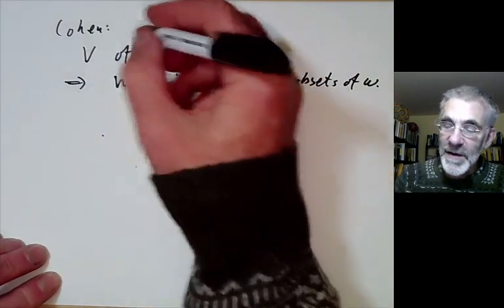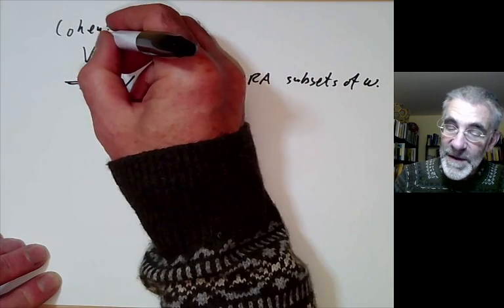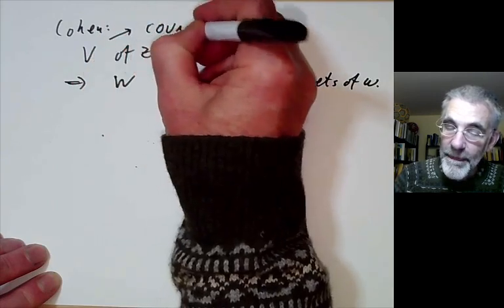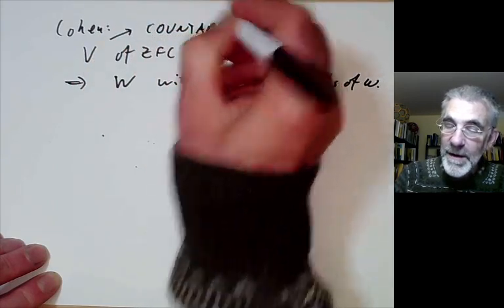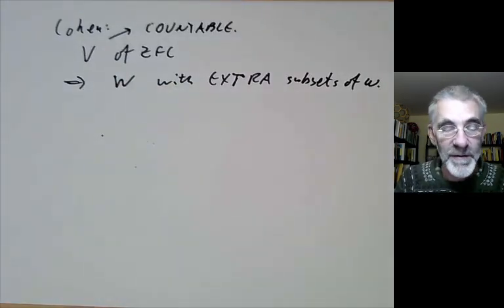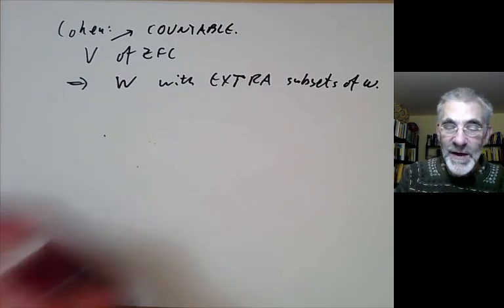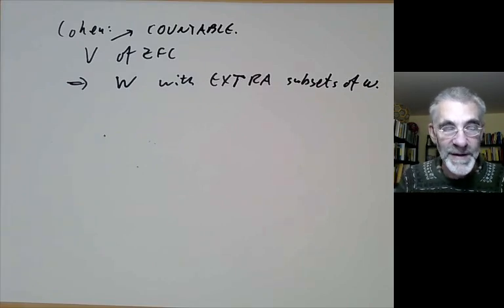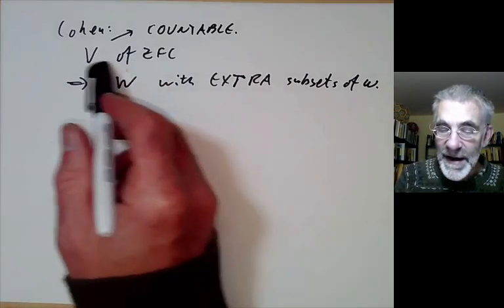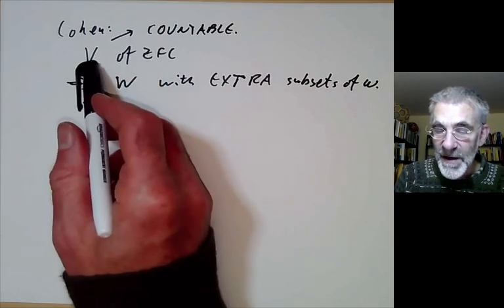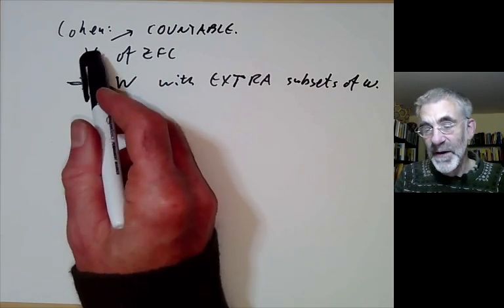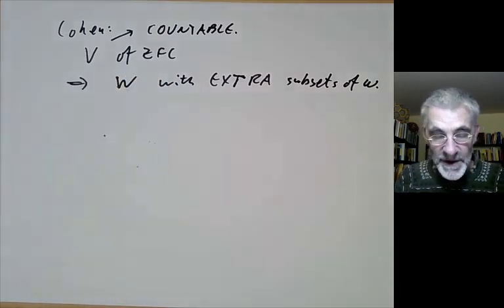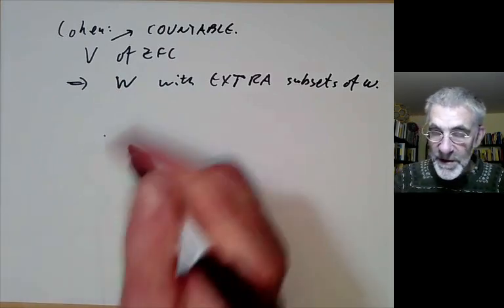One is to take V to be a model of V to be a countable model of ZFC inside some other model. Now the existence of a countable model of ZFC can't be proved using the Zermelo-Fraenkel axiom so this is actually a minor mild extra assumption that Cohen was making. Actually strictly speaking I think he was assumed that V was a standard countable model but that's not terribly important in this lecture.